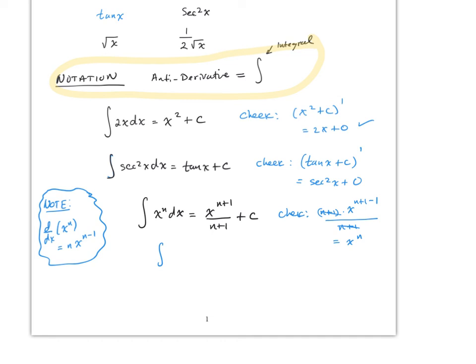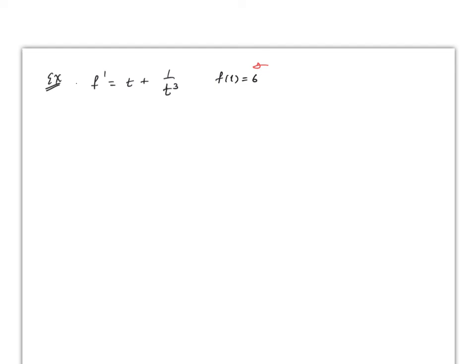So the integral of 2x dx = 2·∫x dx = 2·x^(1+1)/(1+1) + C. The 2s cancel and you get x² + C, which should be obvious now. In the homework, section 4.9 problems may not yet use the integral sign, but you can start using it now. A typical question gives you the derivative and an initial condition, and you need to figure out the value of the constant.